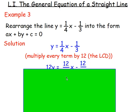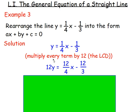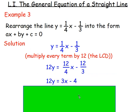Doing that: y times 12 gives 12y. One quarter x times 12 — multiply the numerator: 12 times 1 is 12, so you've got 12 quarters times x. And then 12 over 3 for the last term. Instead of writing 12 over 4, simplify it; instead of writing 12 over 3, simplify it to get a nice easy number. So 12y equals 3x take away 4.